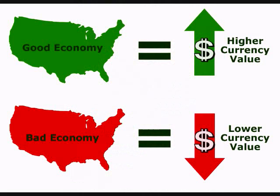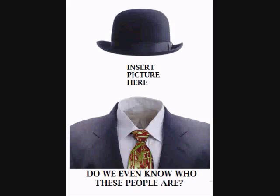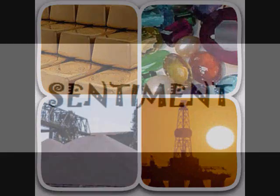Things that increase and decrease the supply and demand for a currency include the current account, which records trade flow into and out of a country, the capital account, which records money flow into and out of a country, economic reports, interest rates, growth rates, inflation, unemployment, actions or statements by a government official, Fed official, Treasury official, or by a central bank, actions or statements by the IMF, the World Bank, or from a G meeting, commodity prices such as oil and gold, and sentiment.